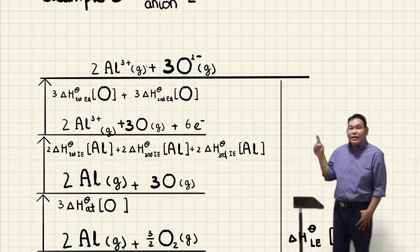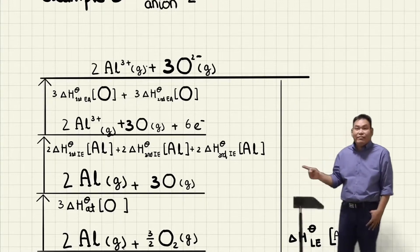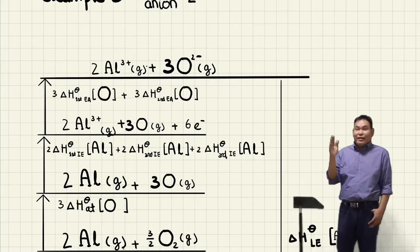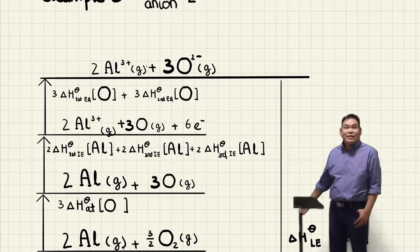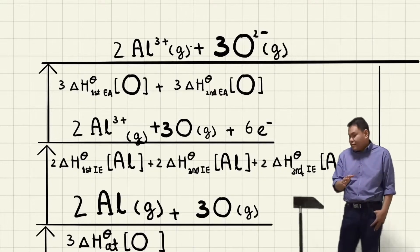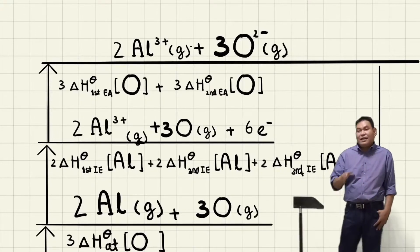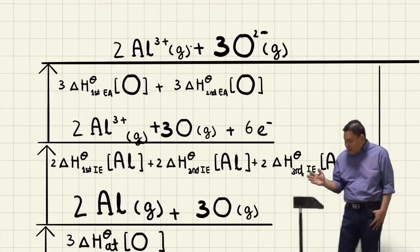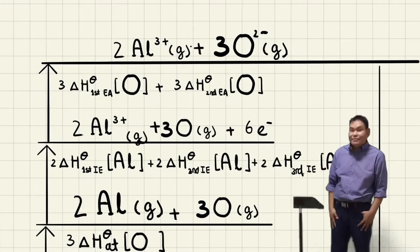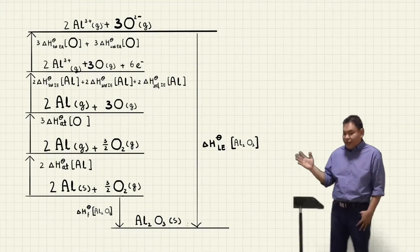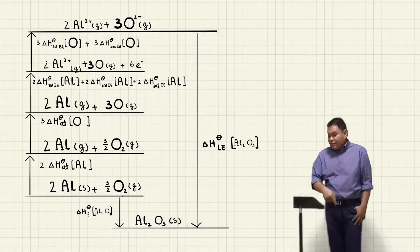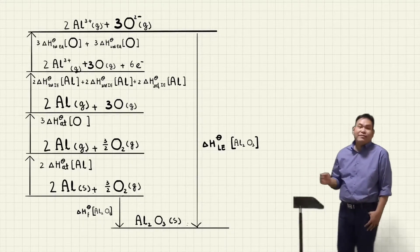Don't forget to multiply the first, second, and third IE of aluminium by two, because we have two Al atoms, and Al is 3+. The next arrow covers the first and second EA of oxygen, multiplied by three. So we have three delta H first EA and three delta H second EA of oxygen. Then the downward arrow is delta H lattice energy of Al2O3, with a coefficient of one.